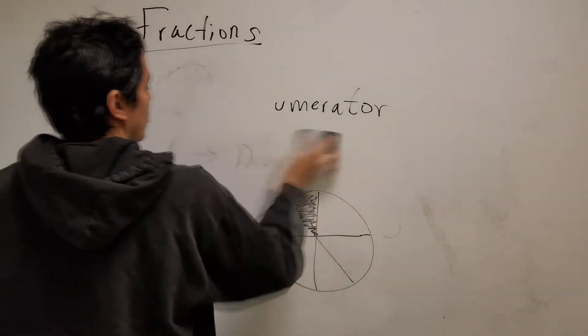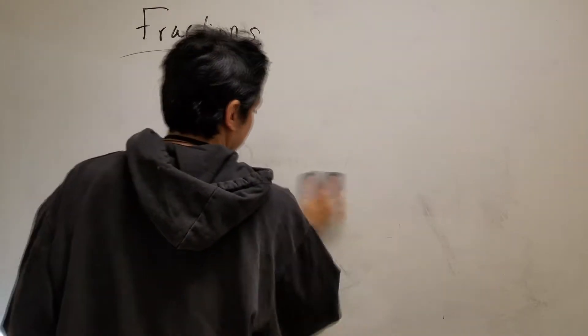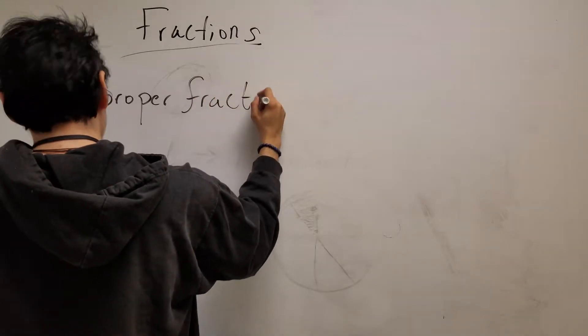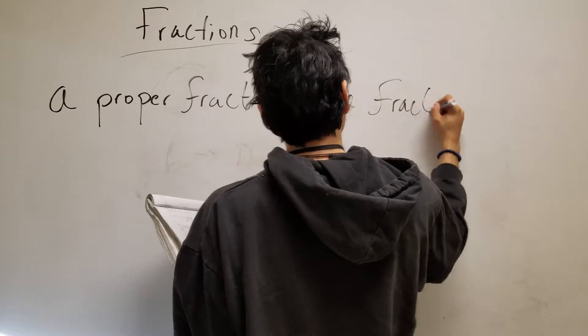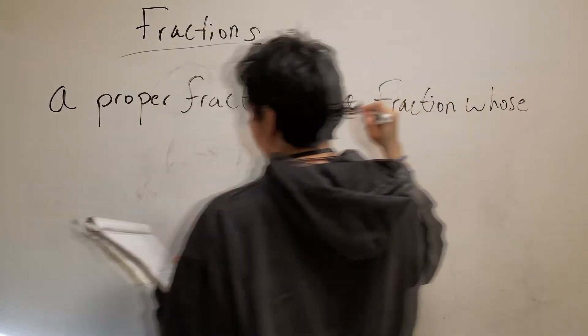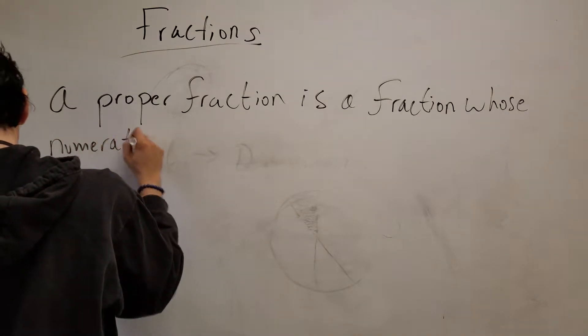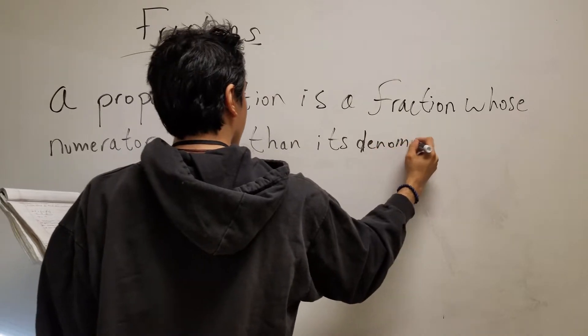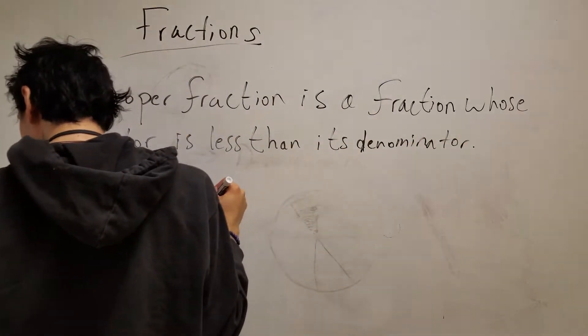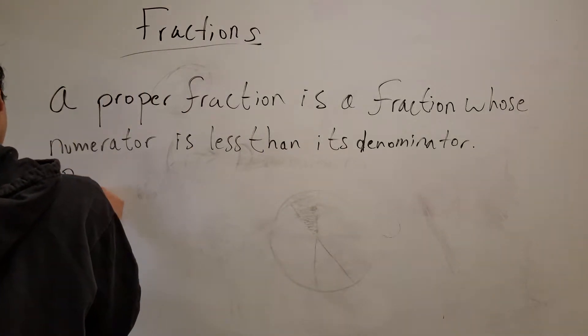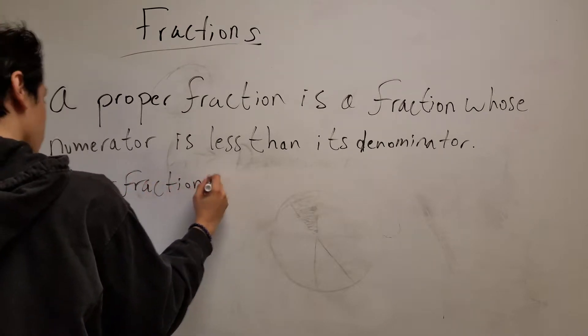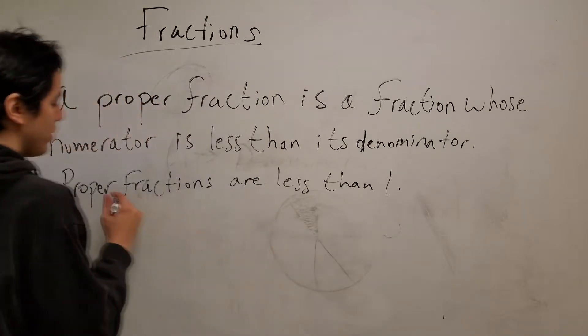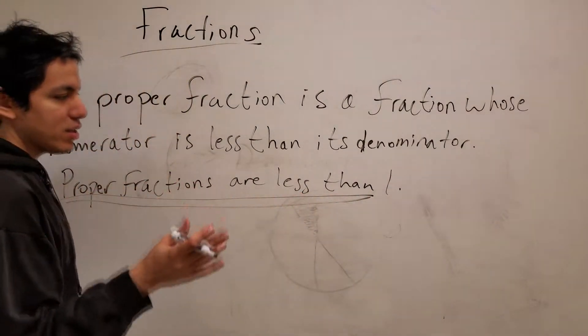Let's understand what makes a fraction proper or improper. A proper fraction is a fraction whose numerator is less than its denominator. Generally, to remember, proper fractions are less than 1. So no matter what, always remember, this is very important: proper fractions are less than 1 no matter what.